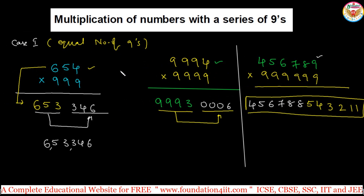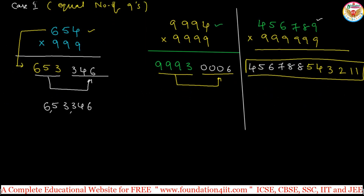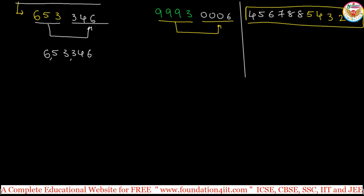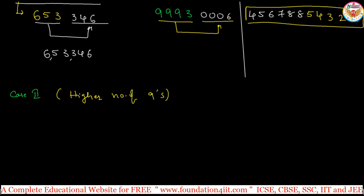That is Case 1, when there is an equal number of 9s. Now let us look at Case 2: a higher number of 9s — that is, when the number of 9s is more than the number of digits in the given number.